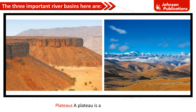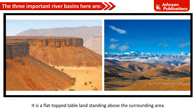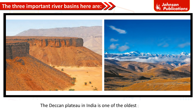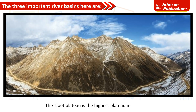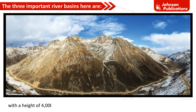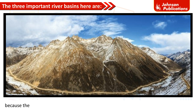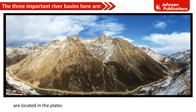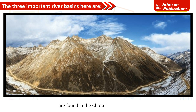A plateau is an elevated flat land — a flat-topped tableland standing above the surrounding area, with one or more sides having steep slopes. The height of plateaus can vary from a few hundred to several thousand meters. The Deccan Plateau is one of India's oldest plateaus. The Tibet Plateau is the highest plateau in the world, at 4,000 to 6,000 meters above sea level. Plateaus are rich in mineral deposits; in India, huge reserves of iron, coal, and manganese are found in the Chhota Nagpur Plateau.